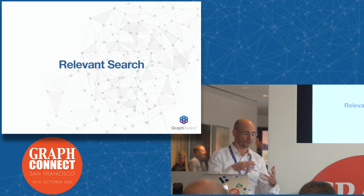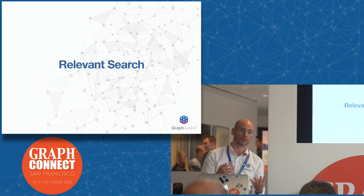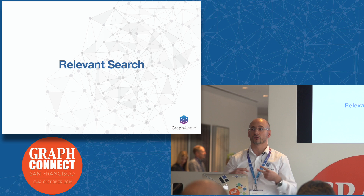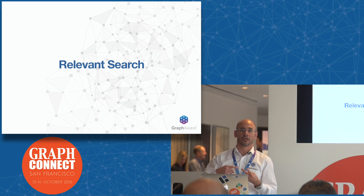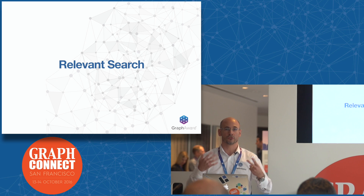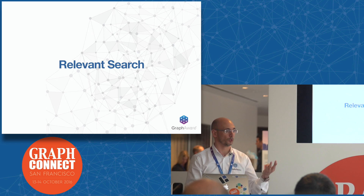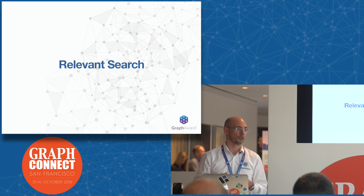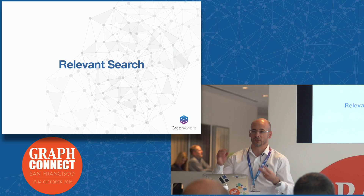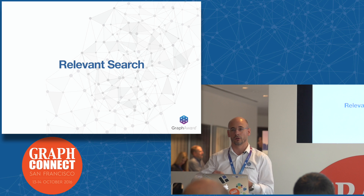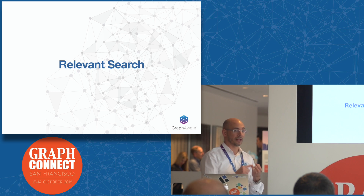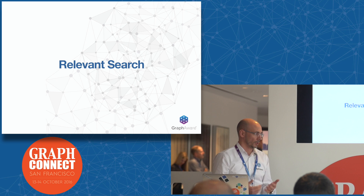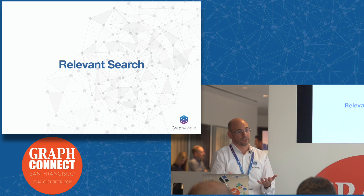Relevant search moves along four different dimensions. First, text — because obviously you need to reply with the right response. Second, users — because you know a lot about your users: their profile, their previous interactions, their preferences. Third, context — because providing search for web search or e-commerce is completely different, as is providing search for a specific domain like medical or healthcare. And the last one, maybe the most important, is the business goal — because if you would like to provide search for e-commerce, you need to sell more items, so your business goal is driving your search.